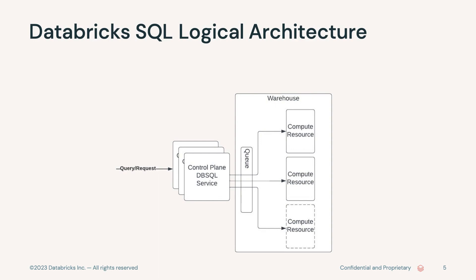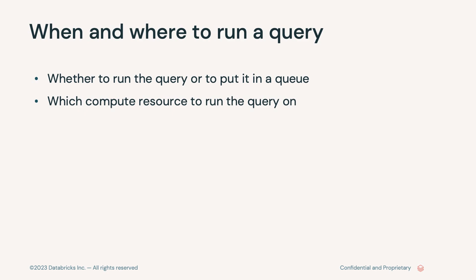Let me show you the high-level architecture of how things execute within Databricks SQL. We have a control plane which accepts queries. From there, we go to the warehouse — the warehouse you set up as part of your Databricks SQL setup. Within the warehouse, we have a queue. If your compute is not sufficient or not ready, we put queries in the queue. We also have compute resources, and the third box is dotted, meaning we scale up or down. The number of clusters we provision is not static — it varies based on traffic and the settings you configure for your warehouse. What we are managing is what goes in the queue, when we take things out, and when to provision or decommission compute resources to save you money.